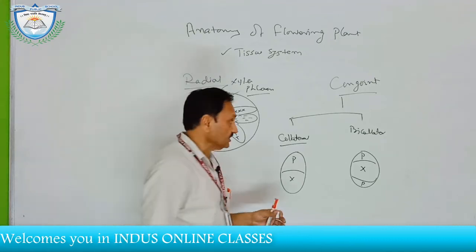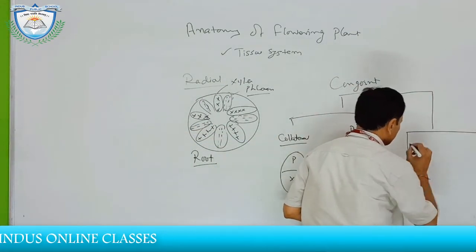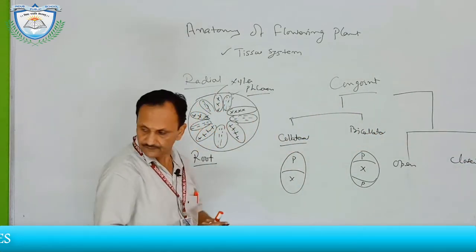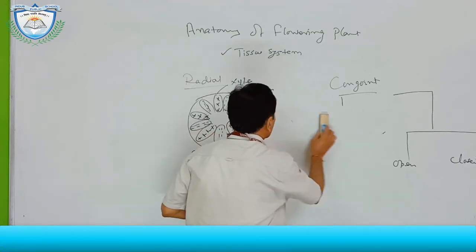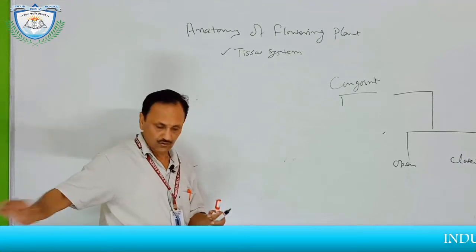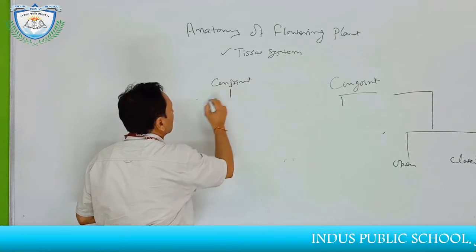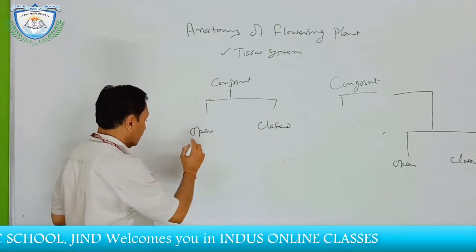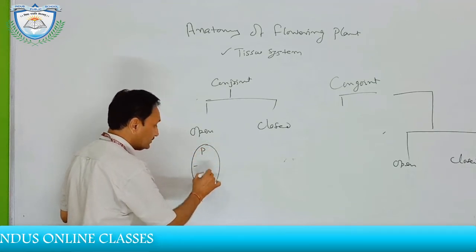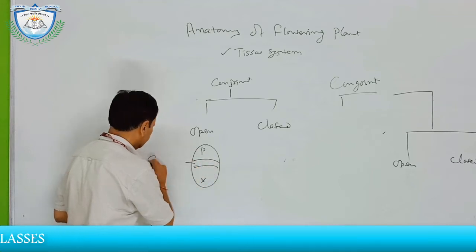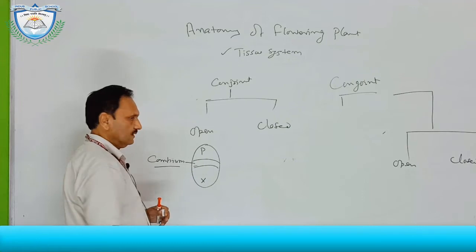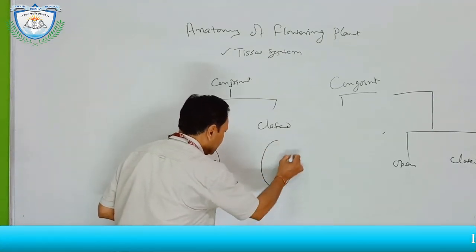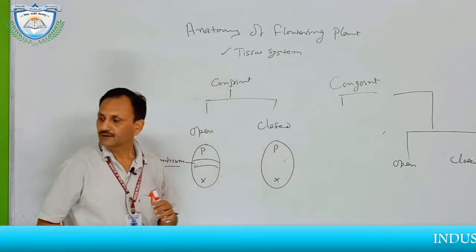The second type of classification is open and closed. In this type of vascular bundle, if phloem and xylem are present with a cambium in between, then it is called open-type vascular bundle. And if the vascular bundle has phloem and xylem without cambium, then it is called closed vascular bundle.